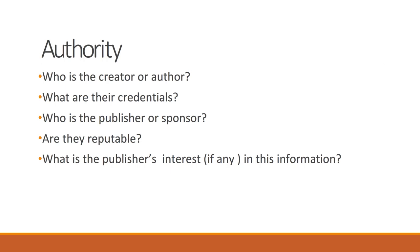Authority refers to the ultimate creator and/or distributor of the information presented in your selected sources. This will require you to address questions such as: who is the creator or author? What are that person's credentials? Advanced degrees relevant to the content of the article? Do they have a lot of experience researching and writing about the topics discussed in the source? What makes them an authority on the topics at hand? You may also want to consider evaluating the publisher, distributor, or sponsor of the information. Are those publishers or sponsors reputable? Try to think about what interest, if any, the publisher or sponsor has in disseminating the information displayed in the source.